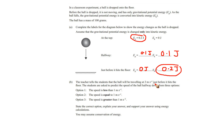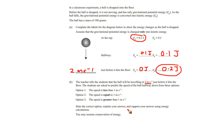Part b: the teacher tells the students the ball will be travelling at 2 meters per second just before it hits the floor. The students are asked to predict the speed of the ball halfway down from three options: option one — less than 1 m/s; option two — exactly 1 m/s; option three — greater than 1 m/s. State the correct option and explain your answer using energy calculations, assuming conservation of energy.